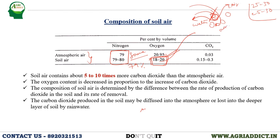In the case of CO2, atmospheric air always has less CO2 compared to soil air, and this difference usually varies from 5 to 10 times — meaning soil air has 5 to 10 times more CO2 compared to atmospheric air. The oxygen content decreases in proportion to the increase of carbon dioxide in the soil.